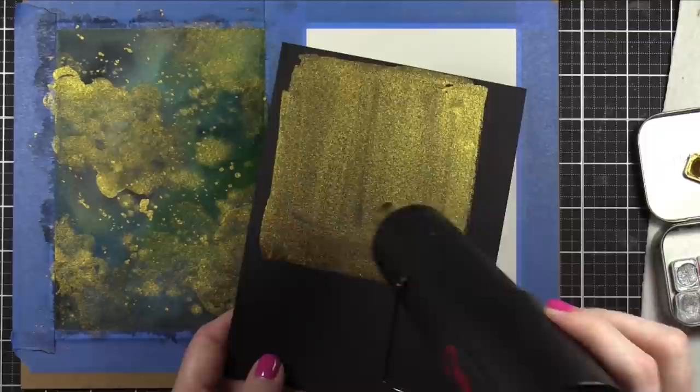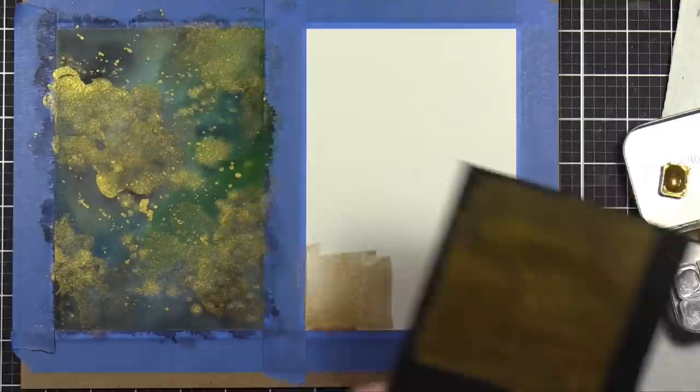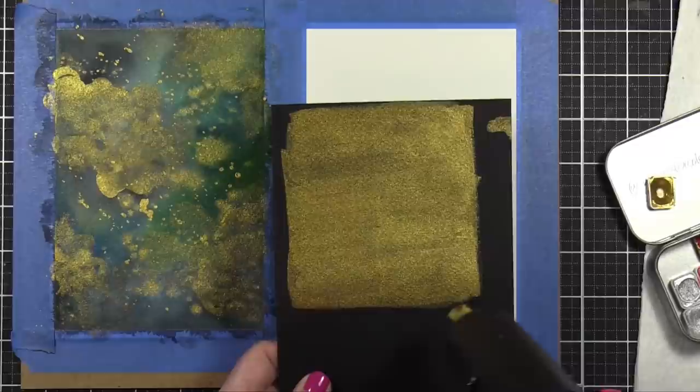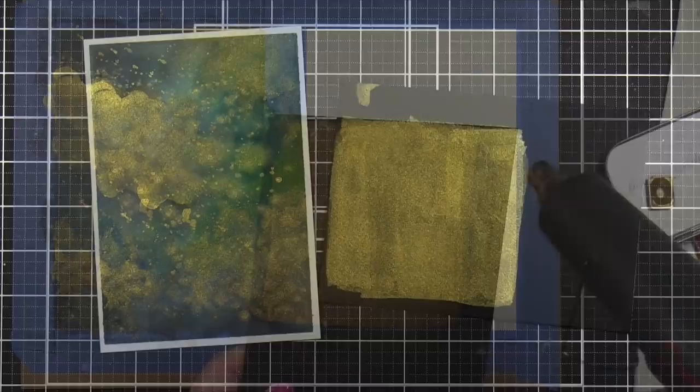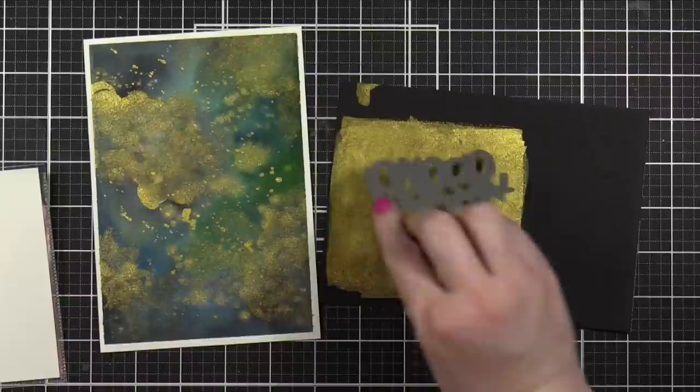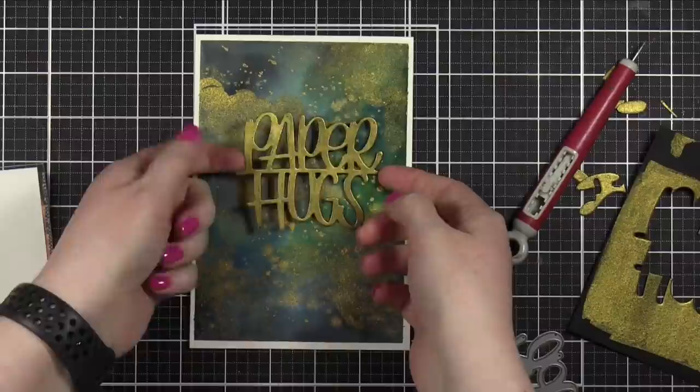So I'm going to do a die cut, a big die cut greeting, and I wanted to use that same gold shade. So I started to paint it on that white piece of watercolor paper, but it just doesn't show the gold as well as it does on a dark surface. So I switched to some black watercolor paper. I painted a large swatch of that gold, and then I used the Paper Hugs die from Simon Says Stamp. I have plenty of room on my big swatch here to die cut that.